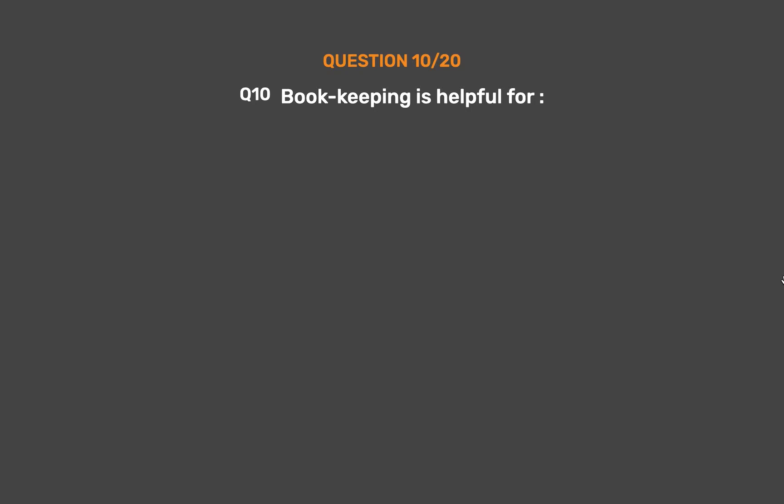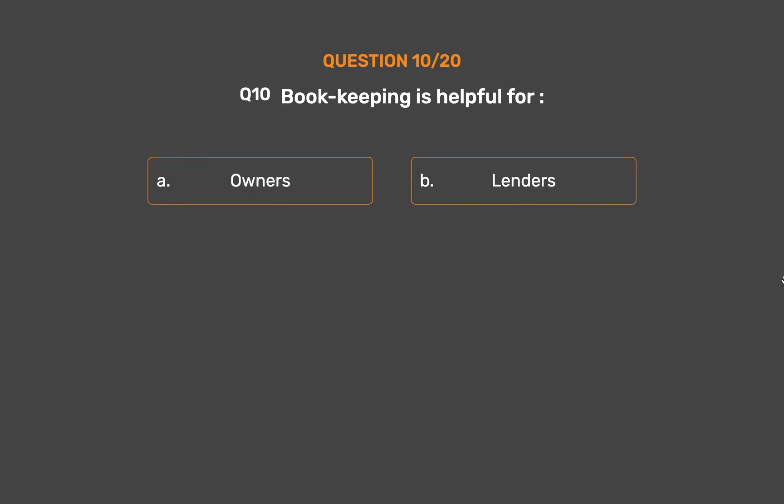Question number ten: bookkeeping is helpful for — Option A: owners. Option B: lenders. Option C: investors. Option D: all of them.